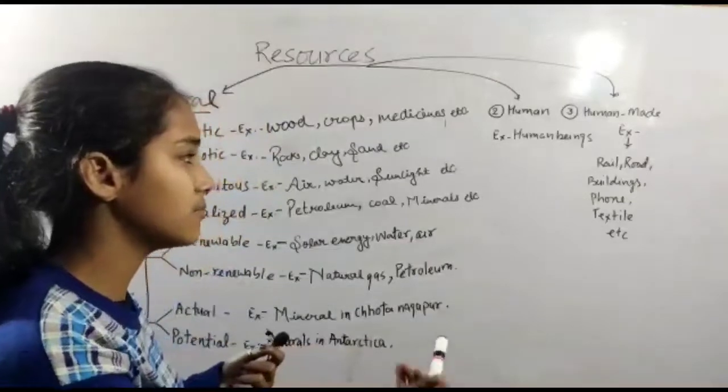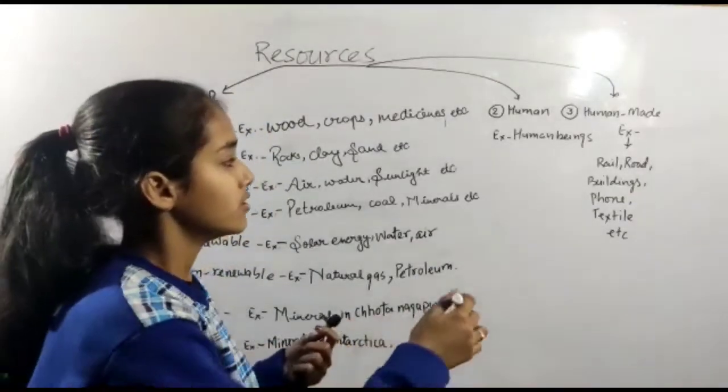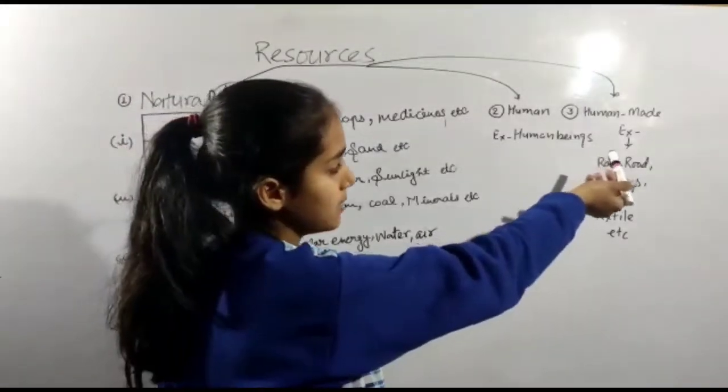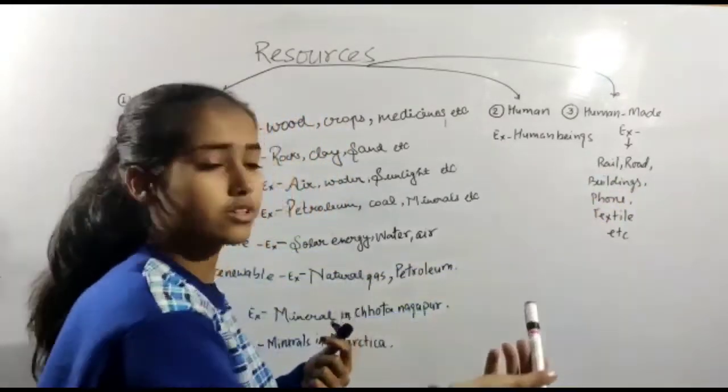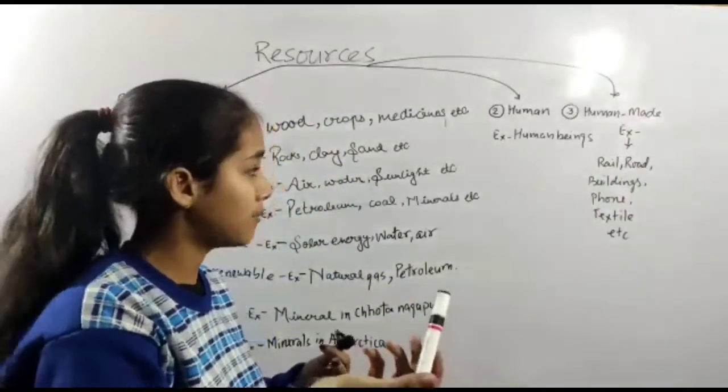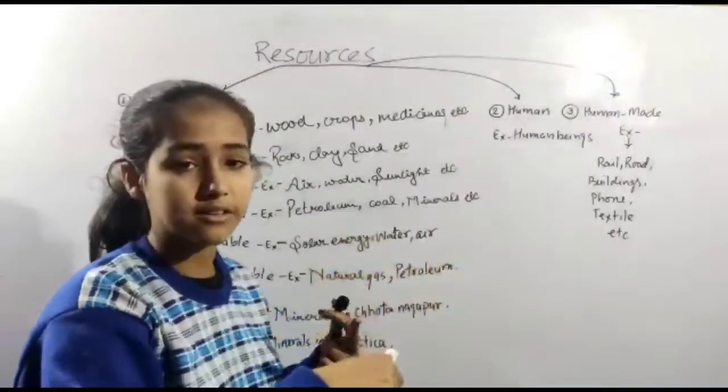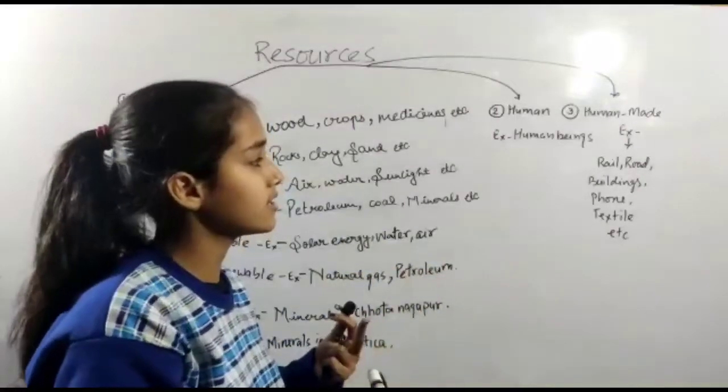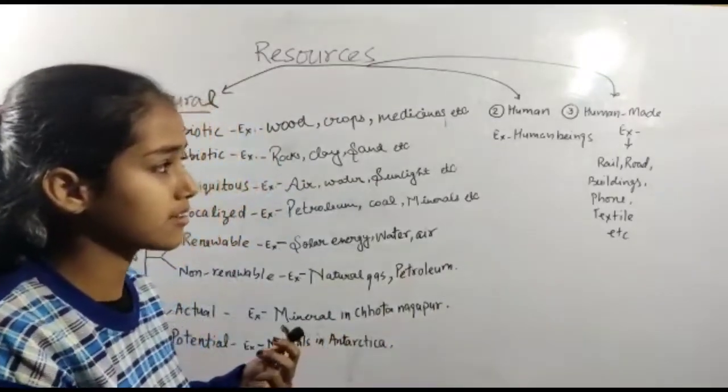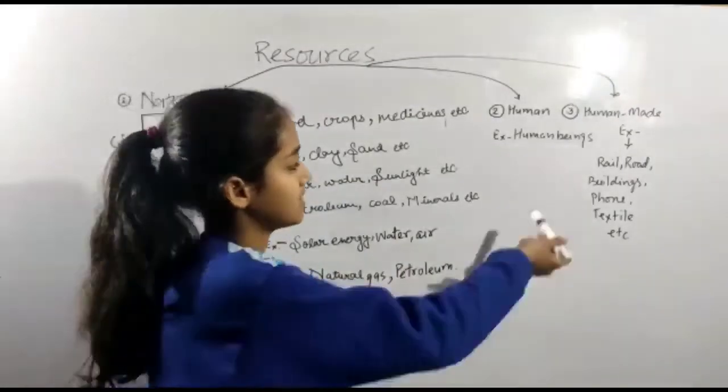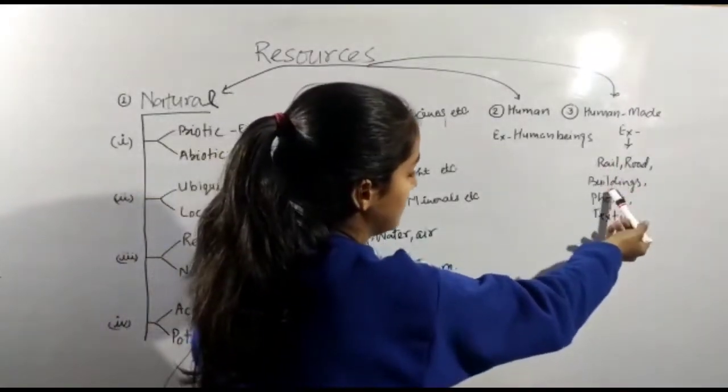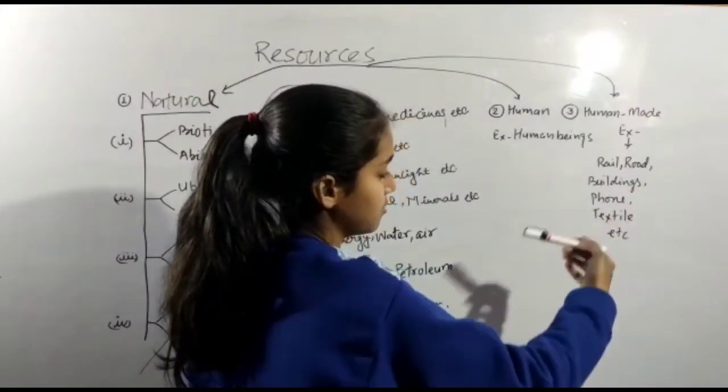Third is human made resources - which resources are created by humans by their knowledge. Human made resources are made by humans, for example rail, road, buildings, font, textile etc.